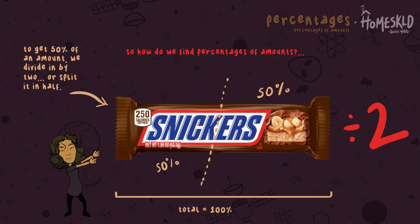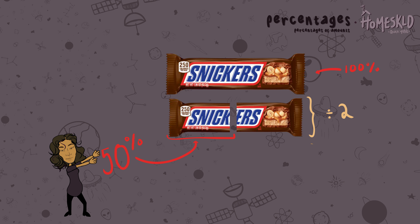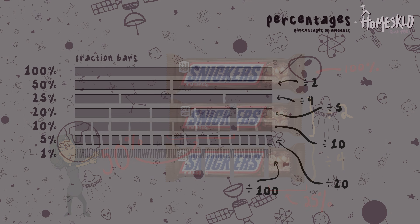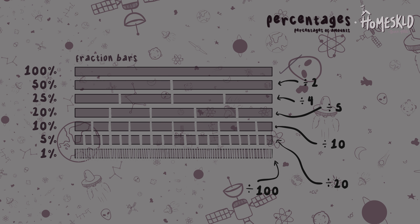50% plus 50% totals 100%. So how would we get 25%? Well, 4 lots of 25 is 100, so the Snickers bar would have to be divided by 4 in order to calculate 25% of it. We follow this same pattern when trying to calculate any percentage of an amount using division. We know to go from 100% to 10% we divide by 10, or from 100% to 1% we divide by 100. Knowing the basics will help to solve even more difficult percentages like 63% or 24% of something.